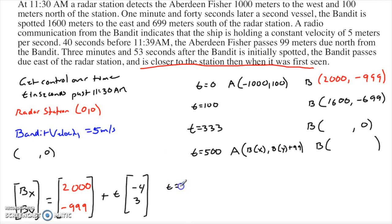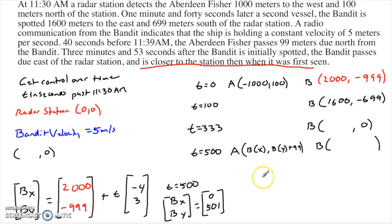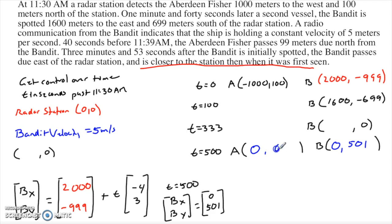With the bandit at 0 comma 501 at t equals 500, I can find the Aberdeen Fisher's position. The Fisher shares the same x-coordinate — 0. And it's 99 meters due north, so its y-coordinate is 501 plus 99 equals 600. So the Aberdeen Fisher is at 0 comma 600 at t equals 500. Now I know two points for the Aberdeen Fisher, which sets me up to find everything about that ship.